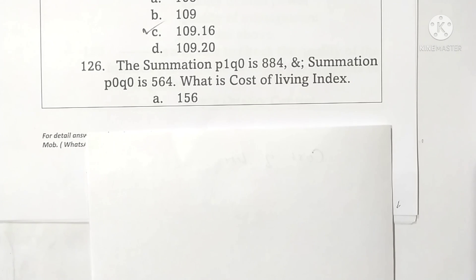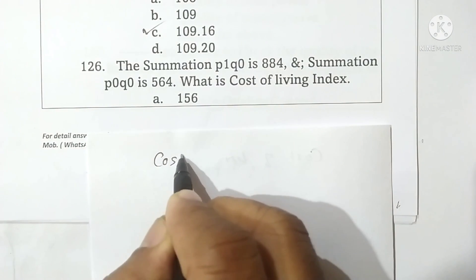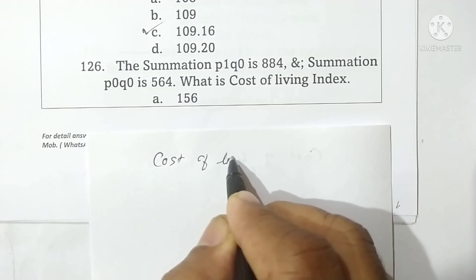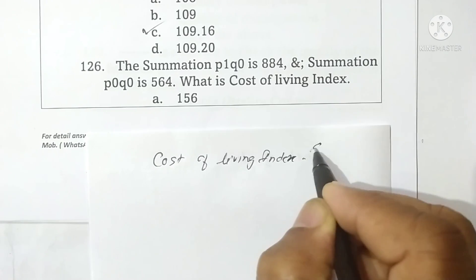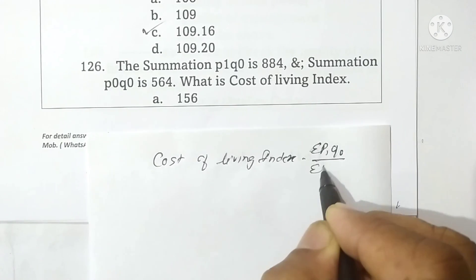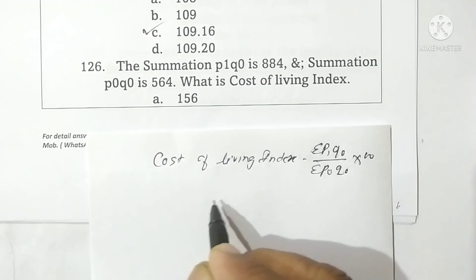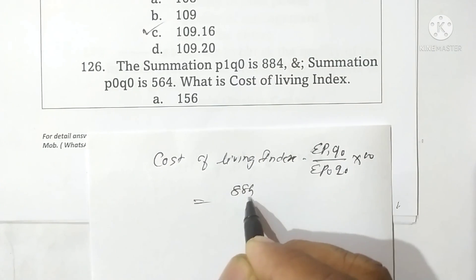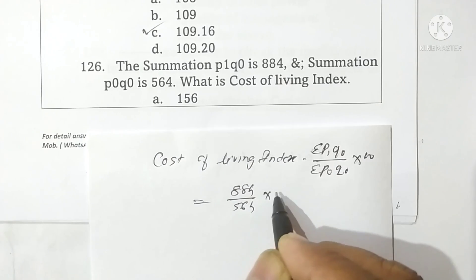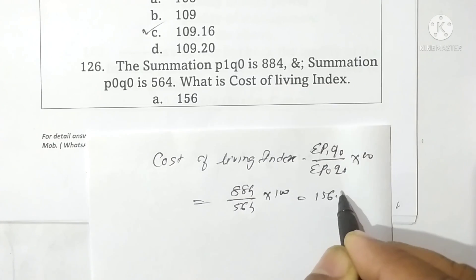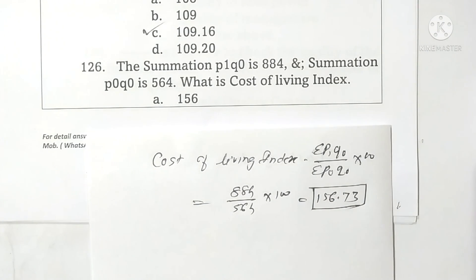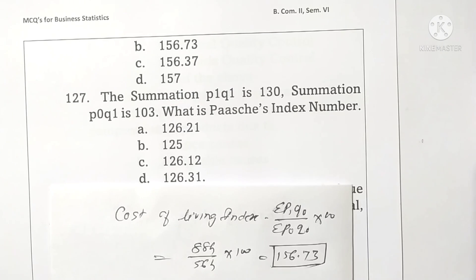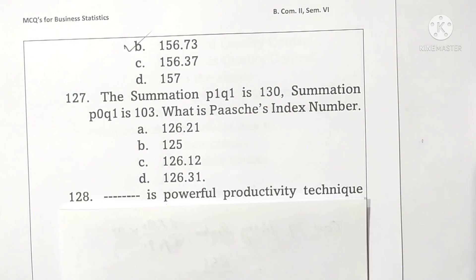Question 126: summation P1Q0 is 884 and summation P0Q0 is 554. What is the cost of living index number? The formula is summation P1Q0 divided by summation P0Q0, into 100. Putting the values: 884 divided by 564 into 100 gives 156.73. Students may use the calculator. Option B is correct.